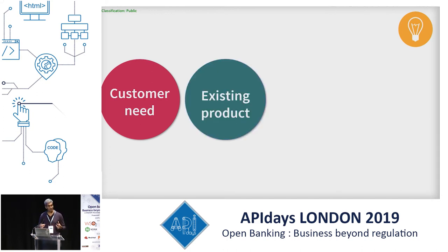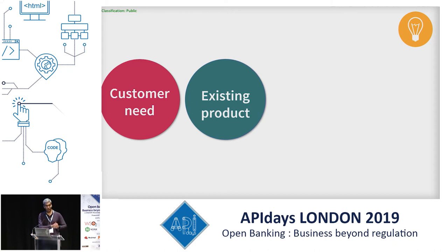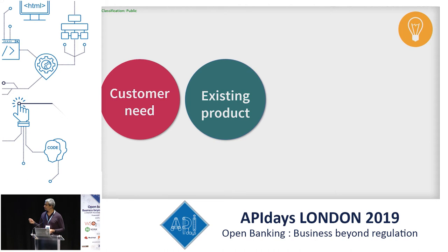You don't always need to look at new products. As a bank, there are lots of existing products. We do faster payments, but faster payment is only provided through certain channels — the internet banking portal, the mobile app, or for large businesses, uploading Excel files. It's not necessarily very real time.